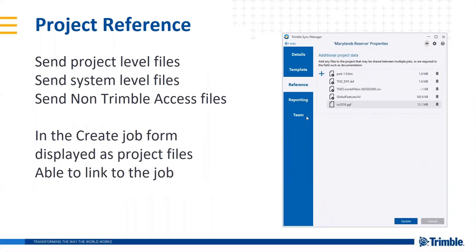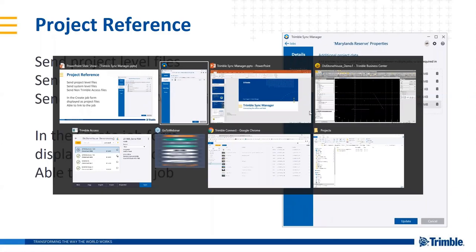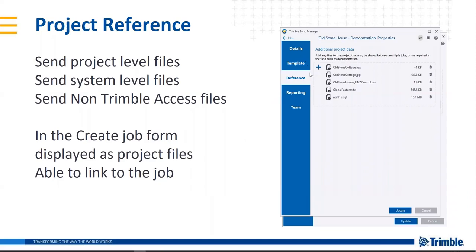Project Reference Files are the project-level files you want to make available across all jobs in that project — the geoid file, feature code library, possibly control points. These are files you use repeatedly. It's also possible to include non-Trimble Access files, such as access codes for a site or contact names, which will be available in the field for the surveyor to check. In the Create Job form, these are displayed as project files and you can select or deselect whether they're linked to a specific job.